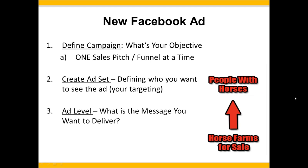For example, if we specialize in selling horse farms, first we define our campaign — get people to click on our ad, taking them to a landing page about mistakes when buying horse farms or how to finance them. Then we create an ad set defining our target audience: people who have horses. Once we've defined that likely group, we design an ad to resonate with them so they'll click on it.